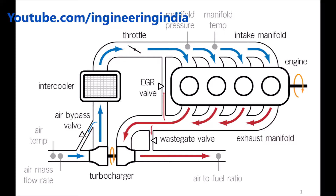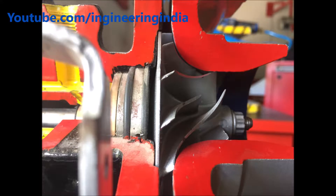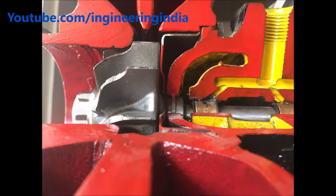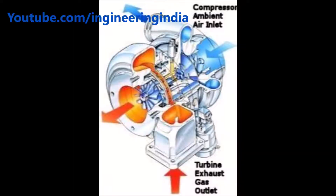A turbocharger runs purely on exhaust gas coming from the exhaust manifold. A supercharger runs on engine power transmitted from the crankshaft via a serpentine belt and pulley. The supercharger draws 150 horsepower for its working and gives an output of 400 horsepower, giving a net profit of 250 horsepower. Today we are going to discuss only the turbocharger — its parts, advantages, disadvantages, and working.